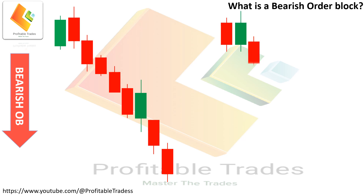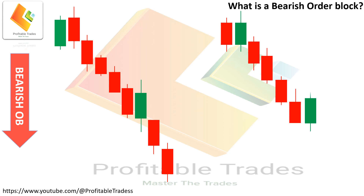Rule number one: price must take out the previous candle high in a bearish order block. Rule number two: there must be a proper imbalance or a fair value gap. Remember, candle color and shape do not matter.